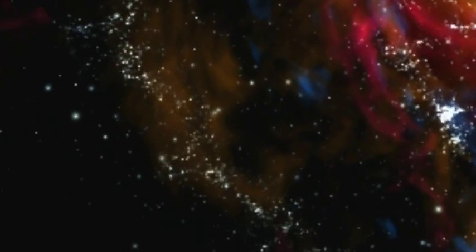4.6 billion years ago, our Sun started to form about two-thirds of the way out on one of the spiral arms of the Milky Way.